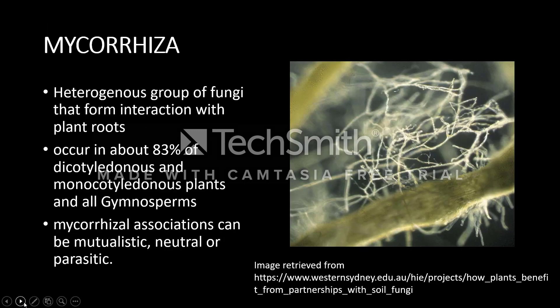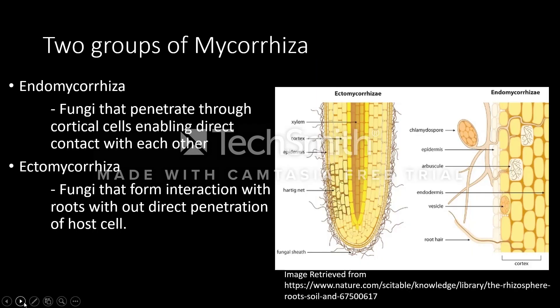Mycorrhiza or mycorrhizal fungi are fungi that form intimate interactions with plant roots. The majority of plants on earth form symbiotic relationships with them. Mycorrhizal associations can either be mutualistic, neutral, or parasitic in nature. There are two major groups. The endomycorrhizas are fungi that penetrate through cell walls and anchor in the root cells, enabling direct plant-fungi contact. While ectomycorrhizal fungi form interactions without penetration, usually interacting through intercellular spaces.